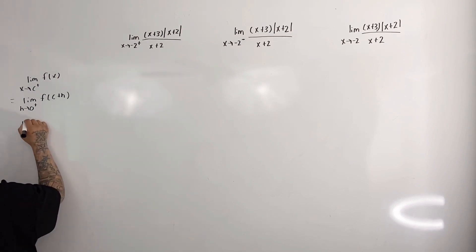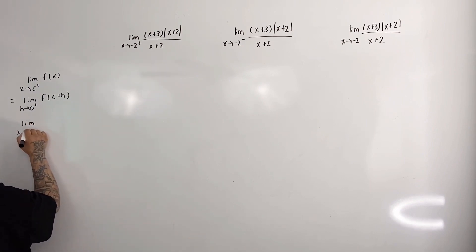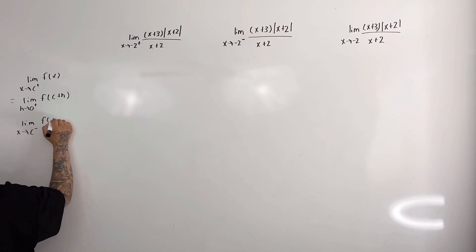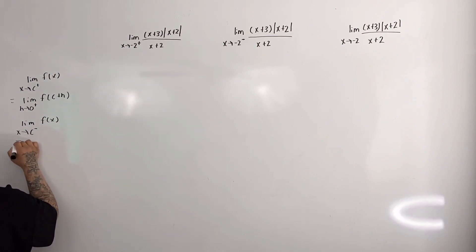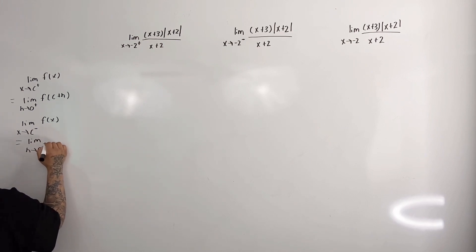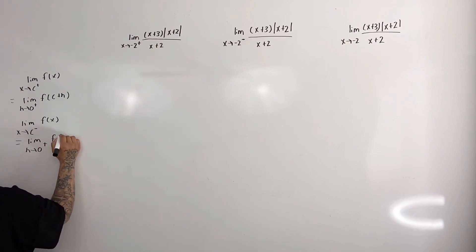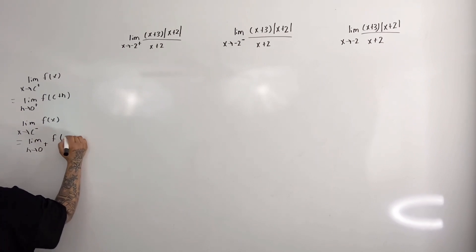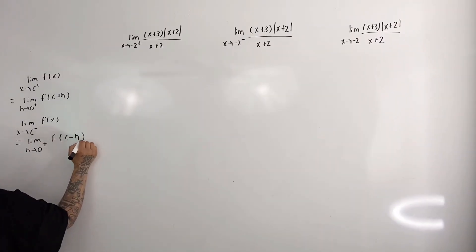And the limit as x approaches c from the left of f(x) is equal to the limit as h approaches 0 from the right of f(c minus h).